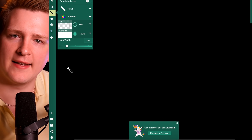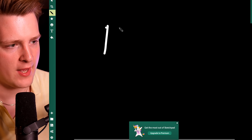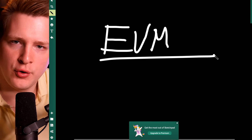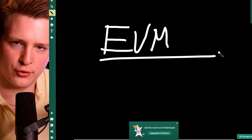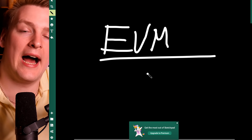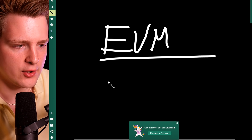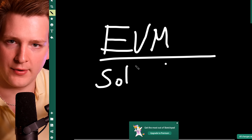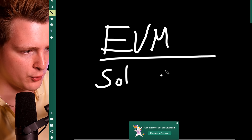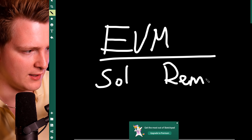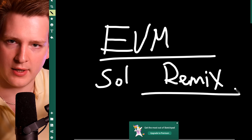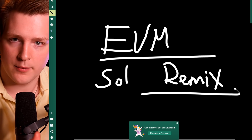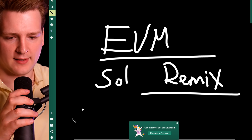The first thing we have to understand is that Polygon is an EVM-based system. When you have EVM-based systems, it means you can use Ethereum development tools to build on other EVM-based systems. So you use the same programming language — Solidity — to build on Polygon as you do on Ethereum. You use the same tools, such as Remix, to build your token.